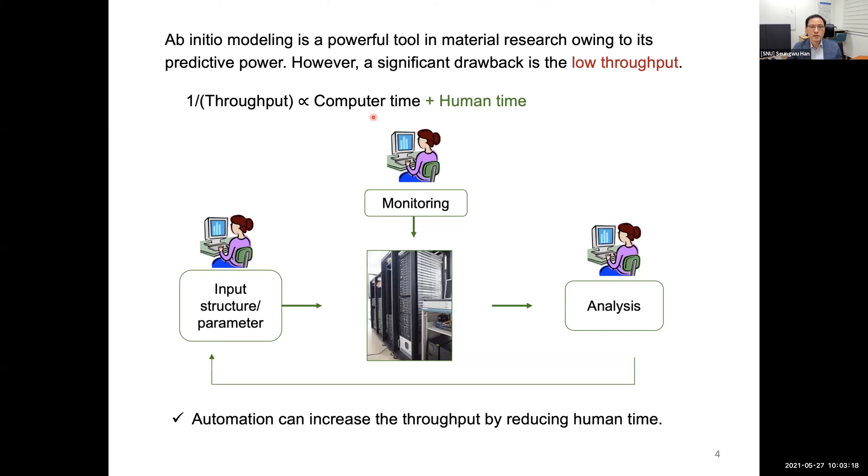However, it has a significant drawback: low throughput. The throughput is determined by computer time and human time. Human time is spent on preparing input files and monitoring computation workflow, and also analyzing the result. So if we can automate this...